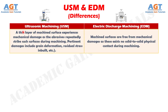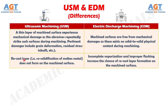Difference number 11: In ultrasonic machining, a thin layer of machined surface experiences mechanical damage as the abrasives repeatedly strike such surfaces during machining; pertinent damages include grain deformation, residual stress build-up, etc. Whereas in electric discharge machining, machined surfaces are free from mechanical damages as there exists no solid-to-solid physical contact during machining. Difference number 12: In ultrasonic machining, a recast layer — that is, resolidification of molten metal — does not form on the machined surface, whereas in electric discharge machining, incomplete vaporization and improper flushing increase the chance of recast layer formation on the machined surface.